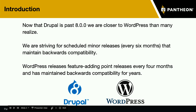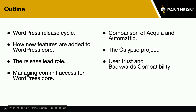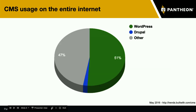WordPress has been maintaining backwards compatibility pretty much since the beginning. They've been on a release schedule of every four months for a number of years now, and they've developed systems for maintaining that release cycle and the core team who makes that all possible. In this session today, we'll be talking about the WordPress release cycle, how new features get into WordPress core, the role of the release lead, managing commit access, two of the biggest players Acquia and Automattic, the Calypso project — an alternative administrative UI for WordPress written with React.js — and backwards compatibility and the philosophy of user trust central to WordPress development.